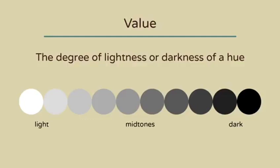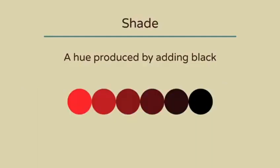This value scale shows you a full range of values. A shade is a hue produced by adding black, so here you have a variety of shades of red made by mixing the red with increasing amounts of black.